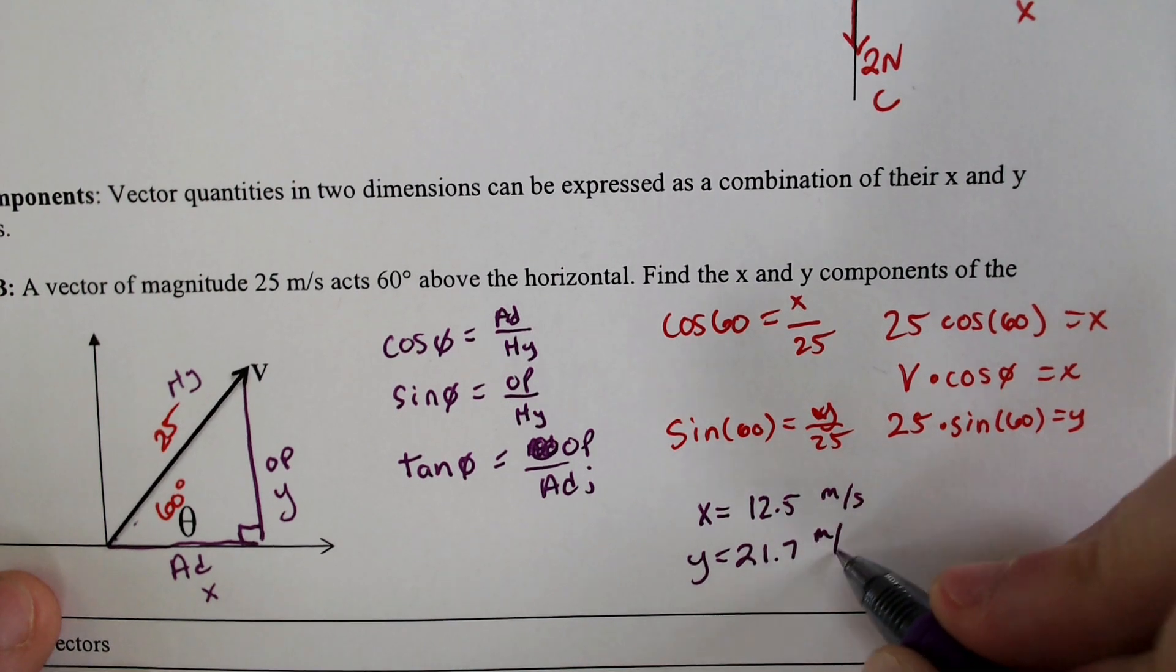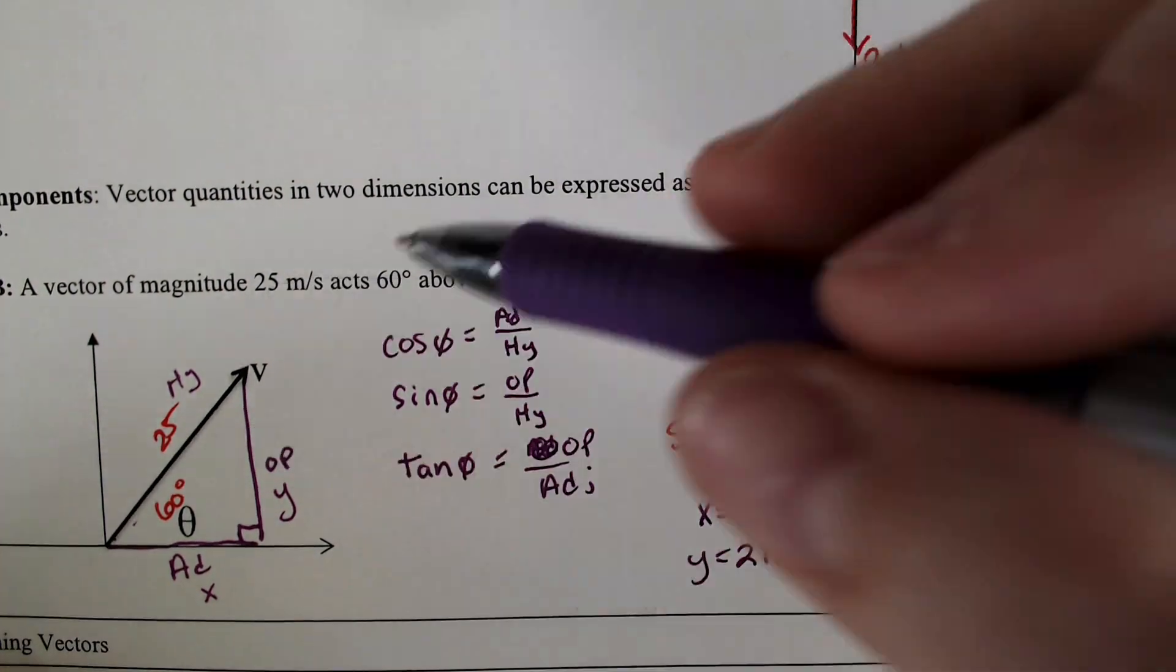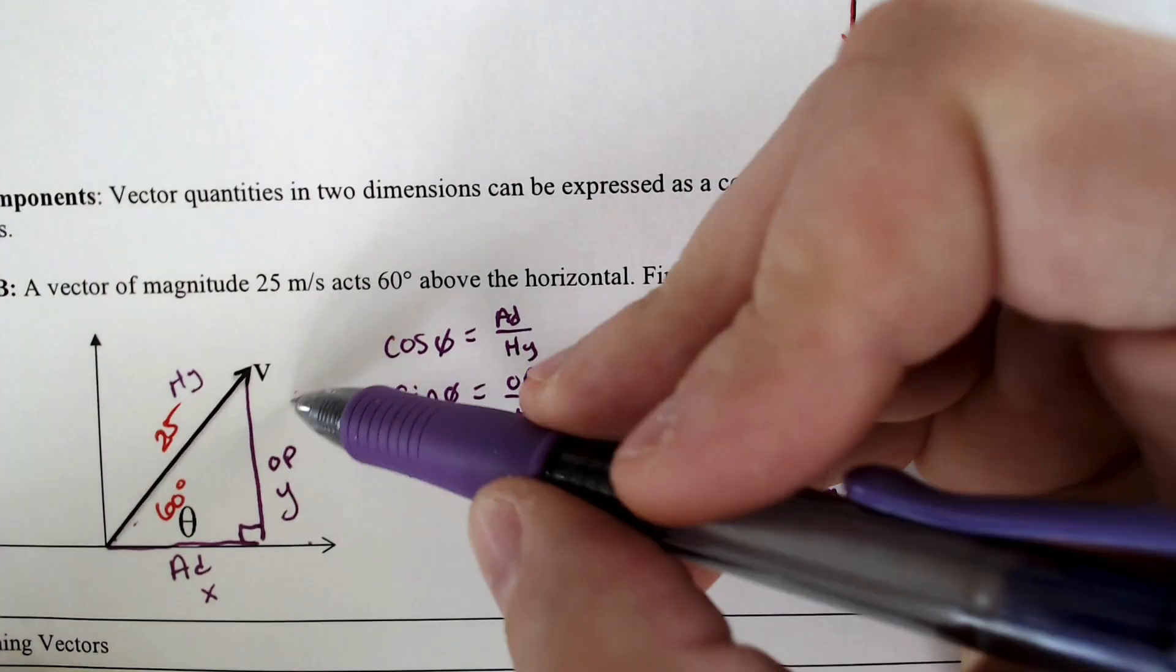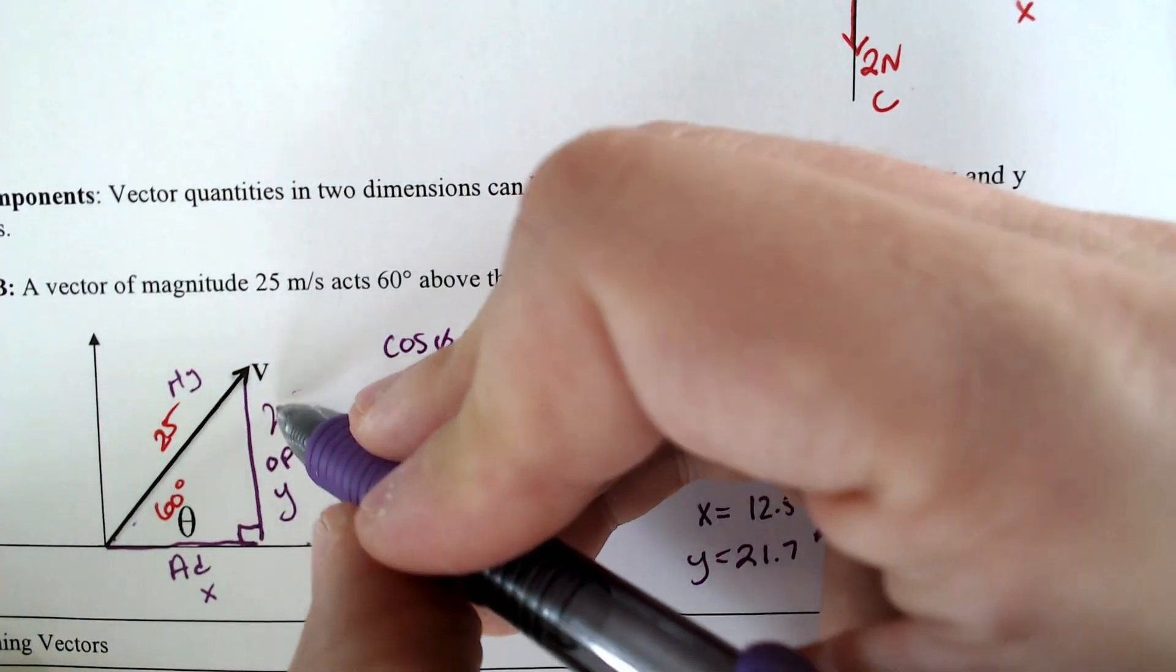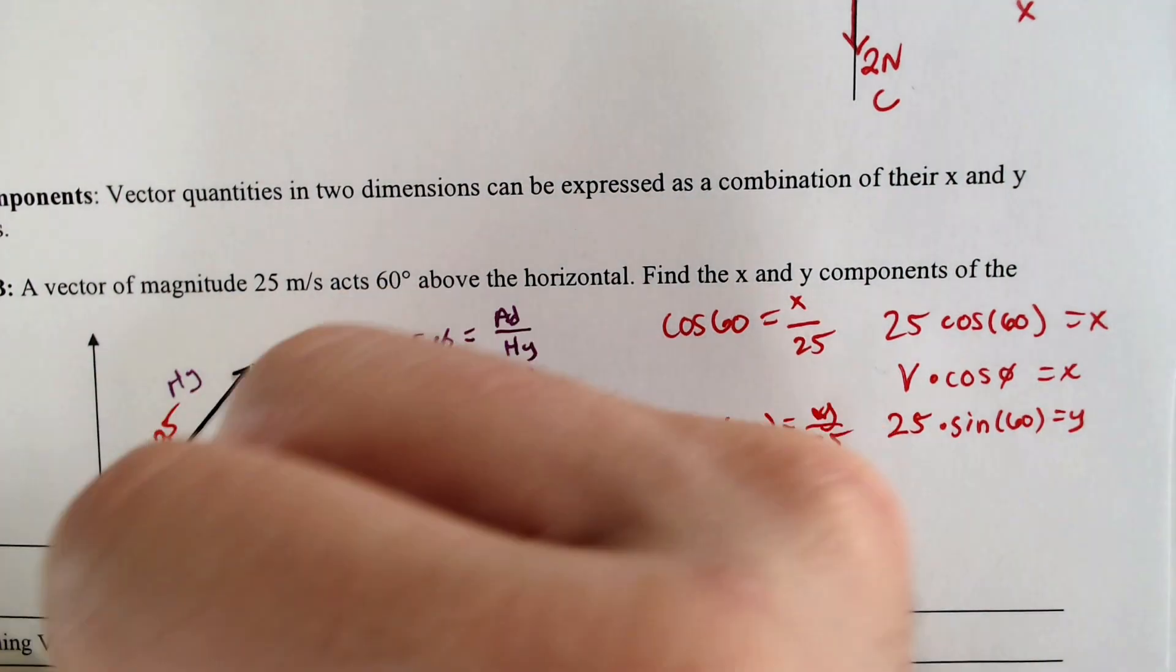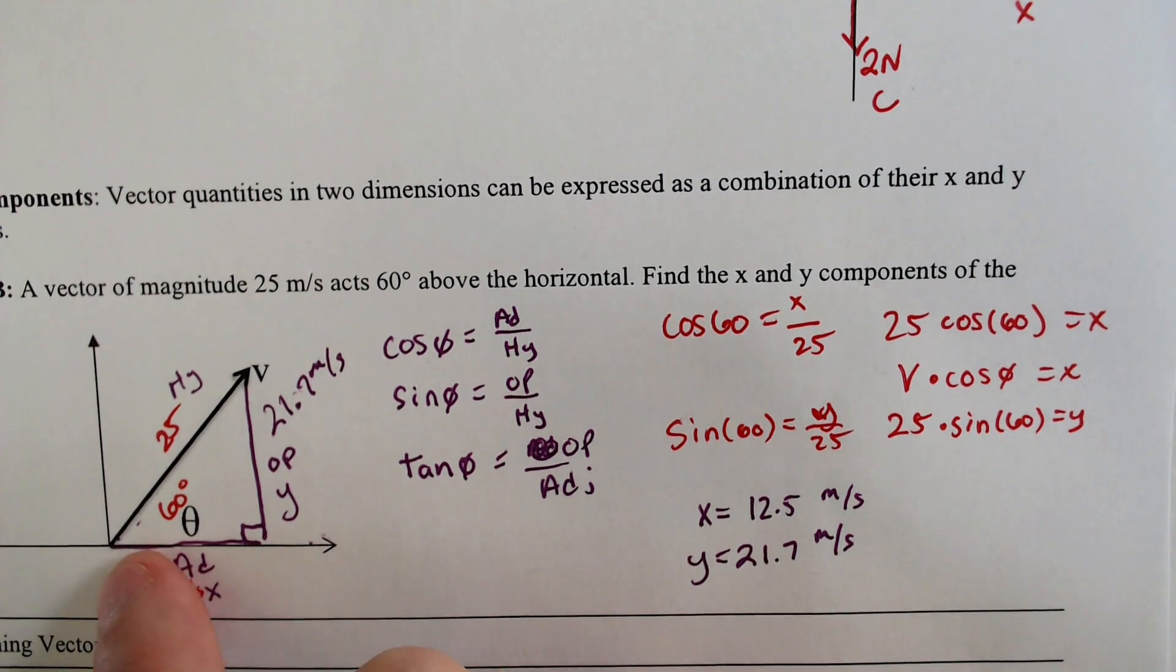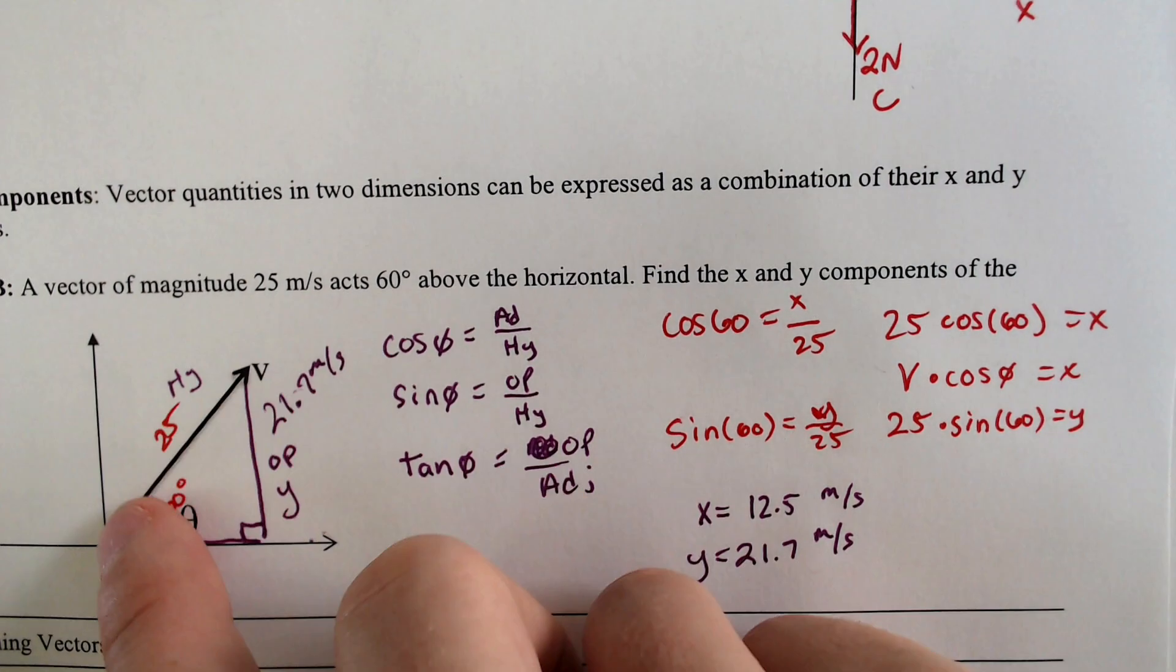And these are still quantities that are in terms of meters per second. So we are going up by 21.7 meters per second, and we are going to the left by 12.5 meters per second.